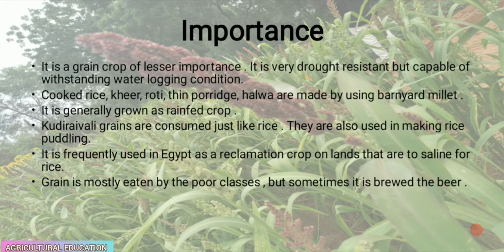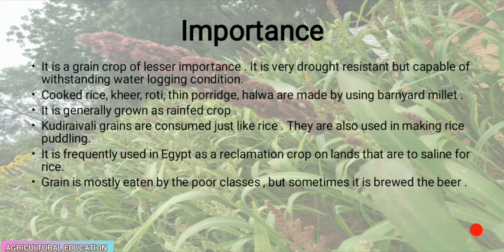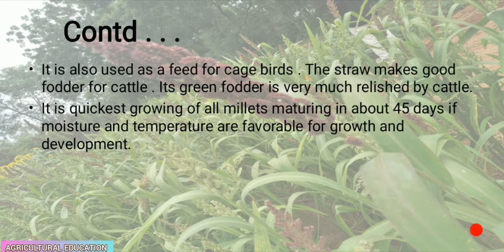Barnyard millet is a grain crop of lesser importance. It is very drought resistant but capable of withstanding waterlogging conditions. Cooked rice, kheer, roti, thin porridge, and halwa are made using barnyard millet. It is generally grown as a rain-fed crop and the grains are consumed just like rice. They are also used in making rice pudding. It is frequently used in Egypt as a reclamation crop on lands too saline for rice. The grain is mostly eaten by the poor classes. It is also used as feed for cage birds, and the straw makes good fodder for cattle.